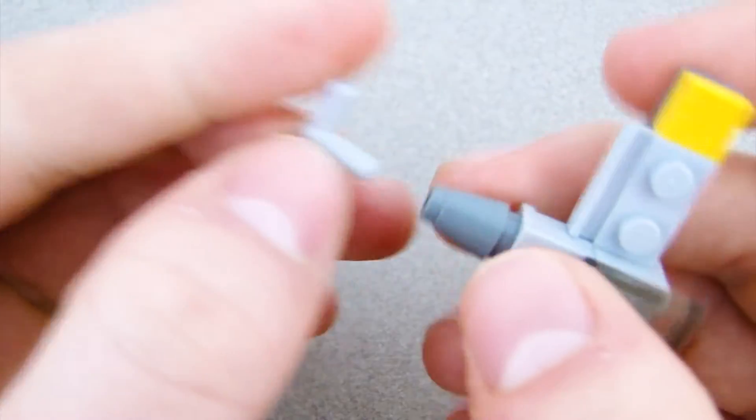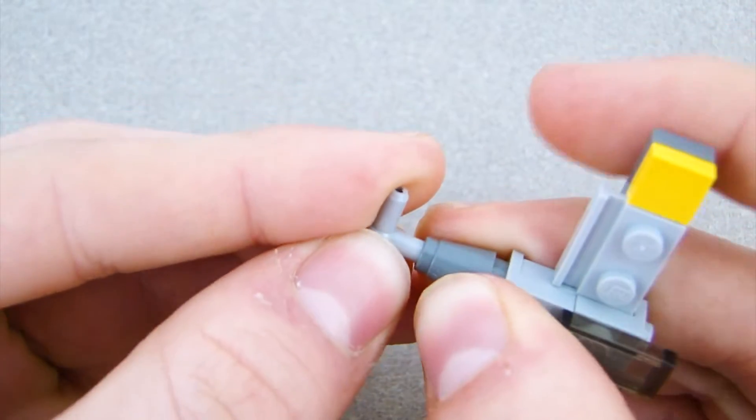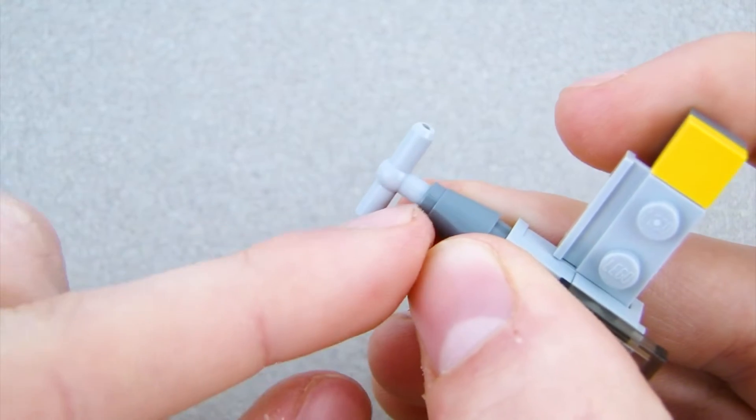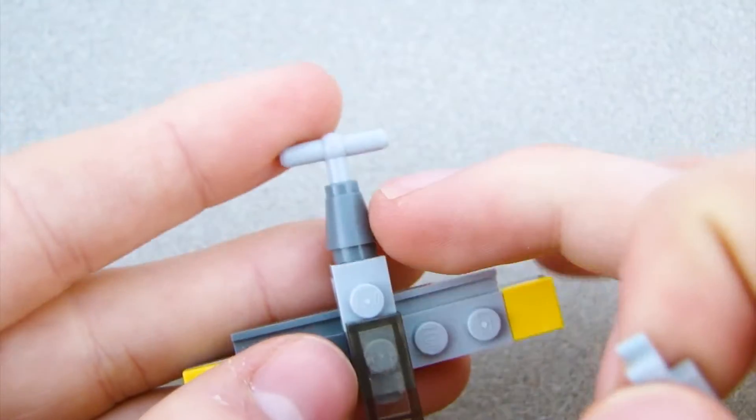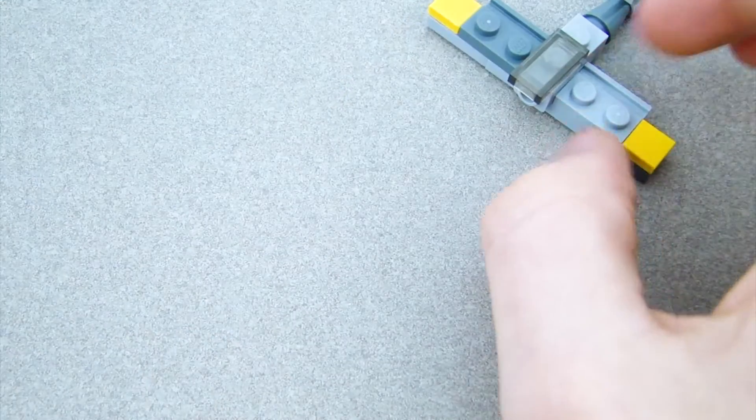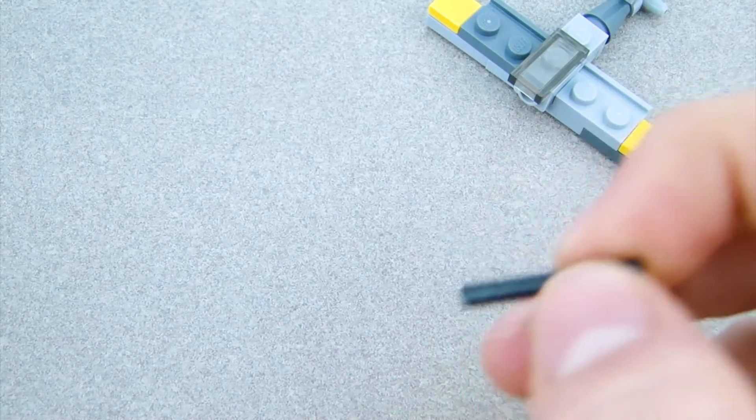Then put this piece inside of that cone, but make sure to leave a little bit of a gap open on it. So like that, don't push it in all the way. Leave that little spot there. Then in that little gap, put this piece right there.